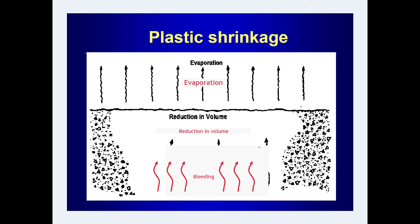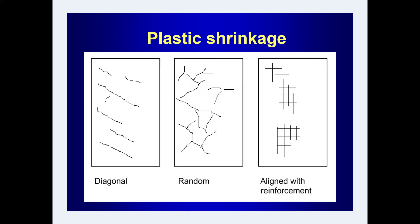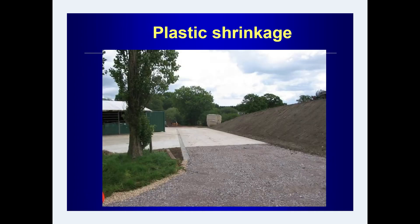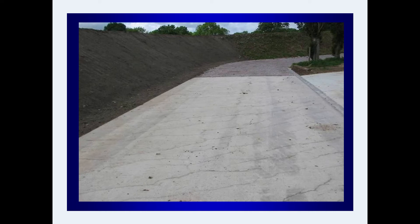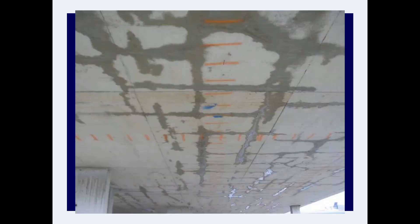The main reasons for plastic shrinkage cracks are: bleeding, excess water getting evaporated, resulting in reduction of volume, tensile stresses — generating different plastic shrinkage crack patterns. These may be diagonal, random, or aligned with the reinforcement. Cracks may be along the reinforcement and completely through the slab.